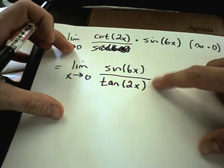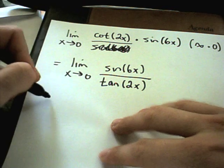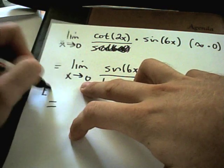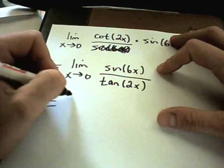And again, notice I've basically turned this back into an indeterminate quotient. This is now going to be of the form 0 over 0. You don't have to check that. It's always going to turn into an indeterminate form, but just pointing it out.